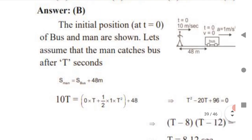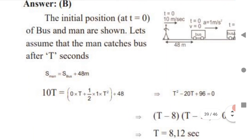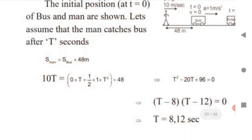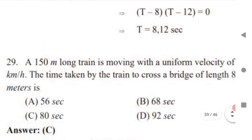Assuming the man catches the bus after t seconds: distance of man = 10t (speed × time). Distance of bus = ut + ½at² + 48. Substituting gives a quadratic equation. Solving the roots: (t − 8)(t − 10) = 0, giving t = 8 seconds and t = 12 seconds. This is a very simple question.